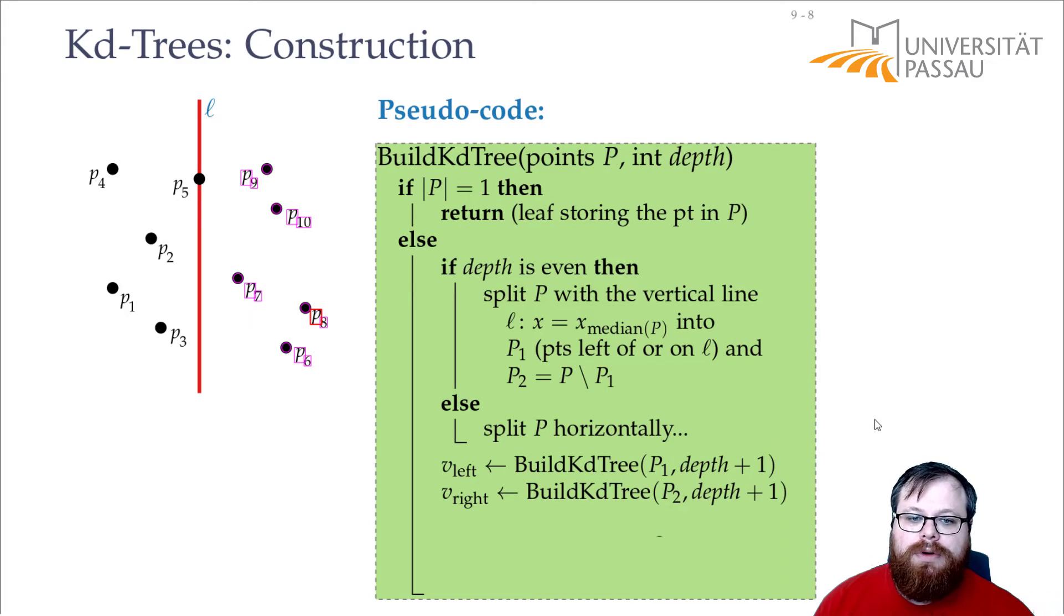And there, the depth is one further. So if it was even now, then it is odd in the next step. This gives us two KD trees, and those we want to combine to a larger KD tree.